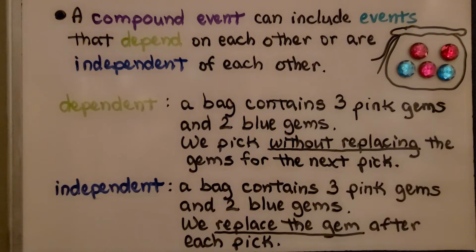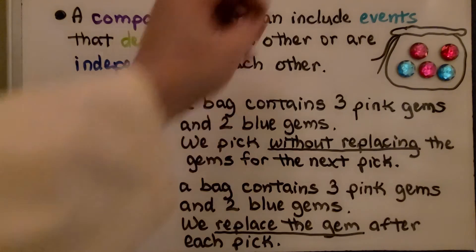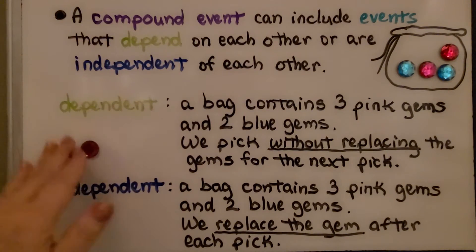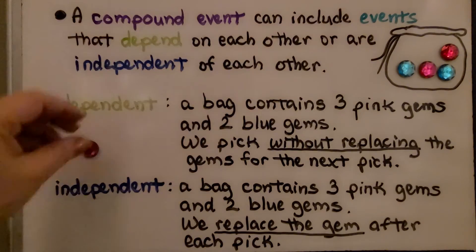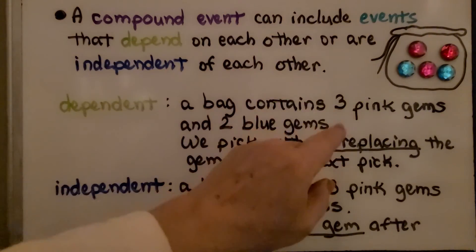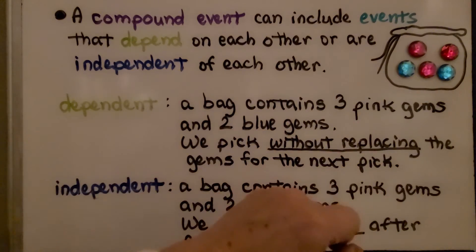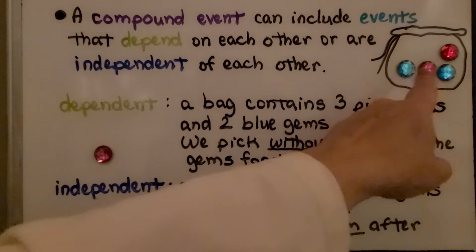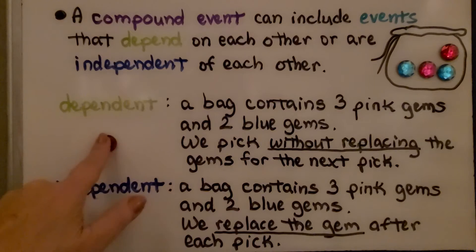A compound event can include events that depend on each other or are independent of each other. A dependent example: a bag contains three pink gems and two blue gems, and we pick without replacing the gems. I put my hand in the bag, pick a gem, and don't put it back. On my first pick I had three pink or two blue, but after picking one, now I only have two pink or two blue. The second pick is dependent on what happened the first time.